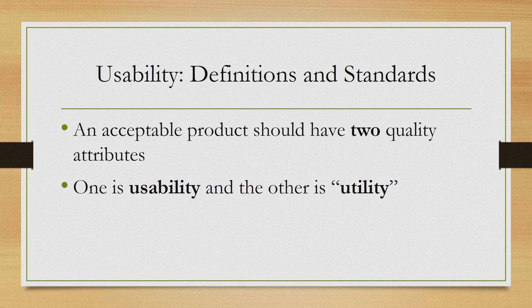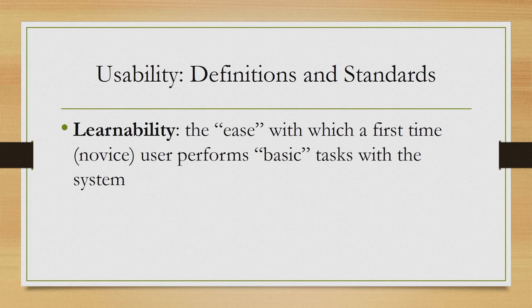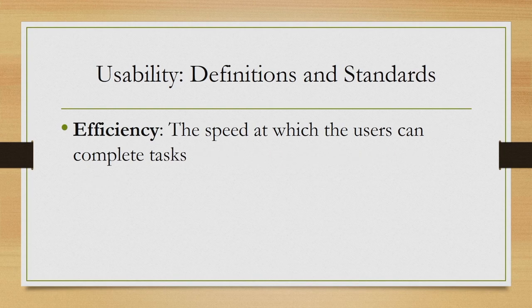According to Nielsen, there should be two qualities in a product — one is usability and the other is utility — and together they make a product useful. In addition, Nielsen proposed five measures or quality components of usability. The first is learnability — the ease with which a first-time or novice user performs basic tasks with the system. The second is efficiency — the speed at which users can complete tasks, typically measured in terms of task completion rate.